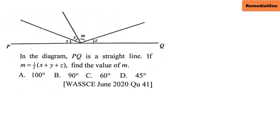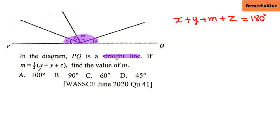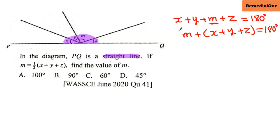We have a straight line here and we want to find the value of m. We know that a straight line adds up to 180 degrees, so the whole thing has to add up to 180. So x plus y plus m plus z must equal 180 degrees. We're interested in m, so let's take m to one side: m plus x plus y plus z equals 180, so m equals 180 minus x minus y minus z.